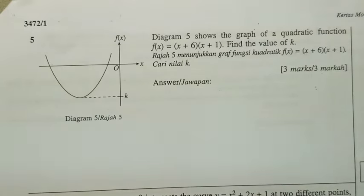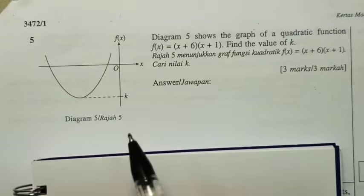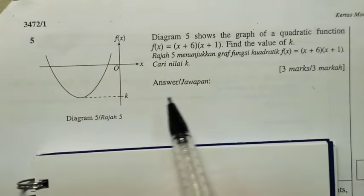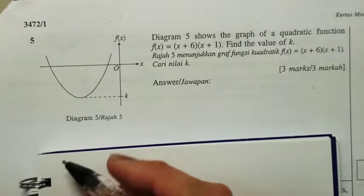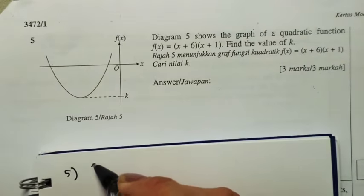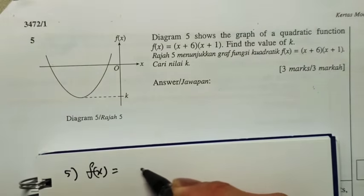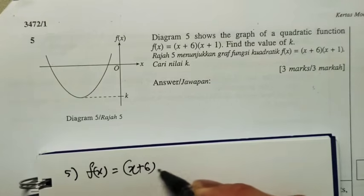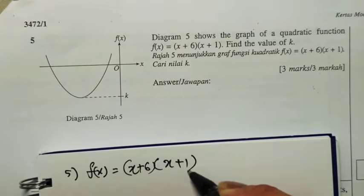This is Kertas model SPM4, paper 1, number 5. Diagram 5 shows the graph of a quadratic function f(x) = (x+6)(x+1).